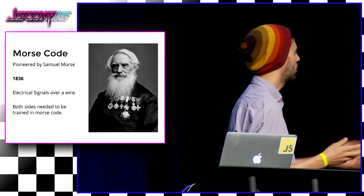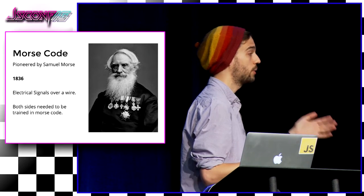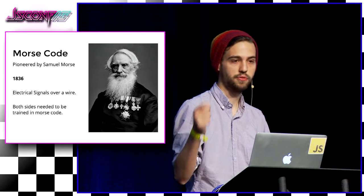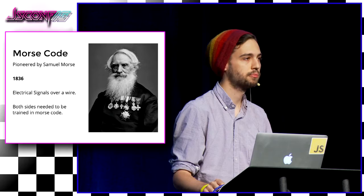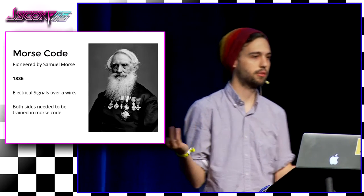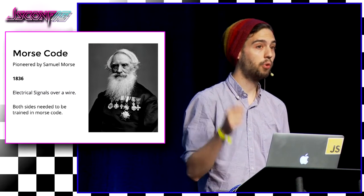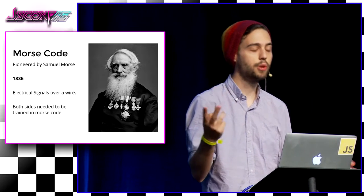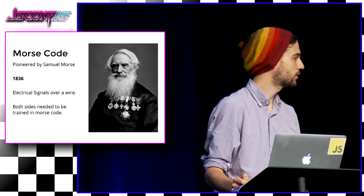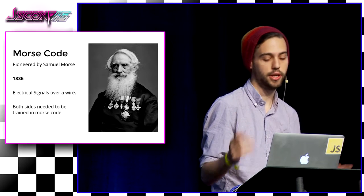Samuel Morse was hanging out at a show in New York — he was a painter. He got a letter from his father that his wife had fallen ill. A man on a horse came and gave him the letter. He wrote a response and sent it. But two days later, before he even left, another person came with a letter saying his wife had died. He said, I hadn't even had time to send a response or get home because there was such a delay in this communication.